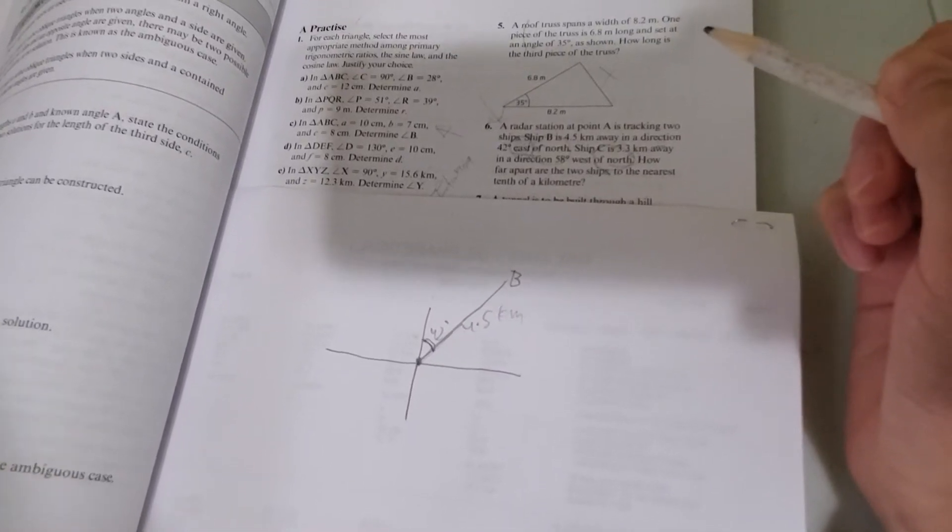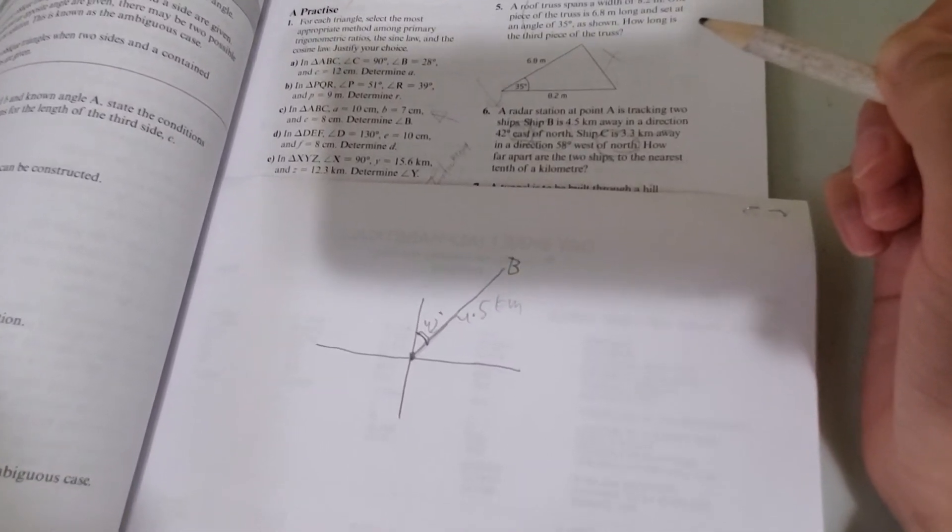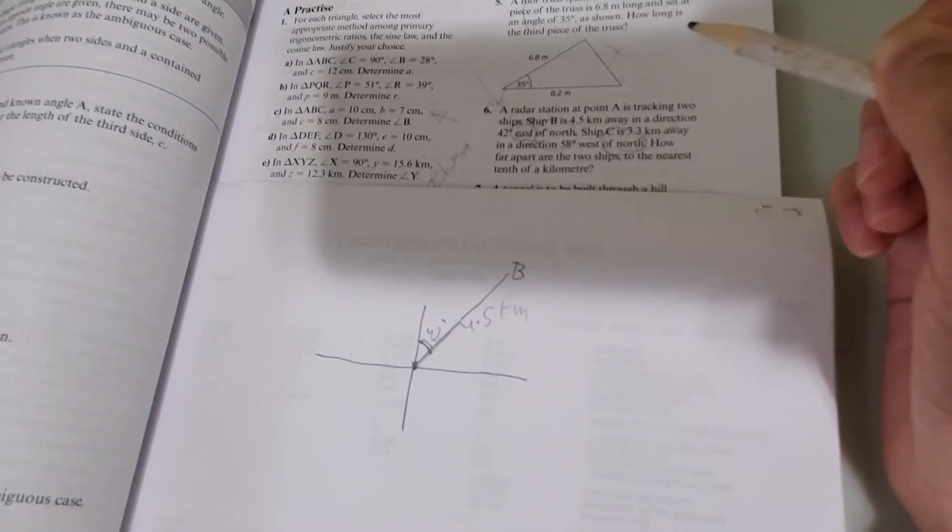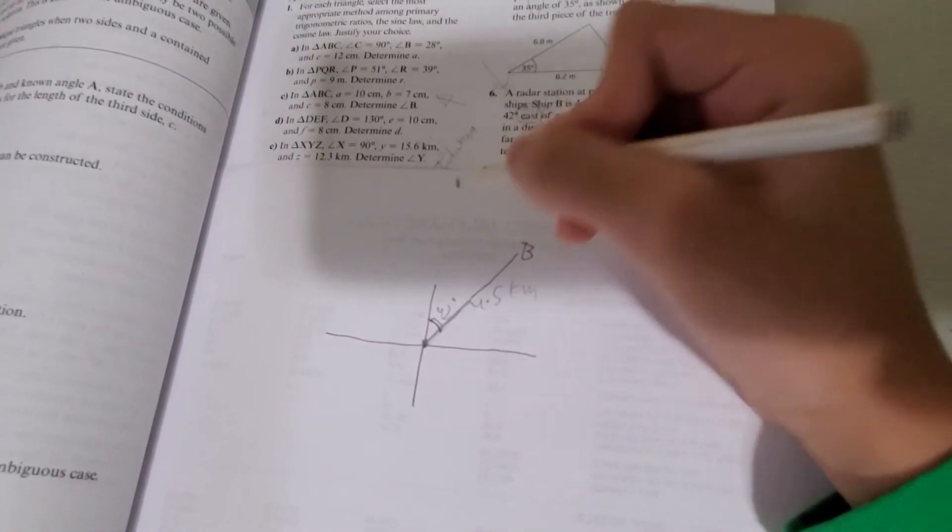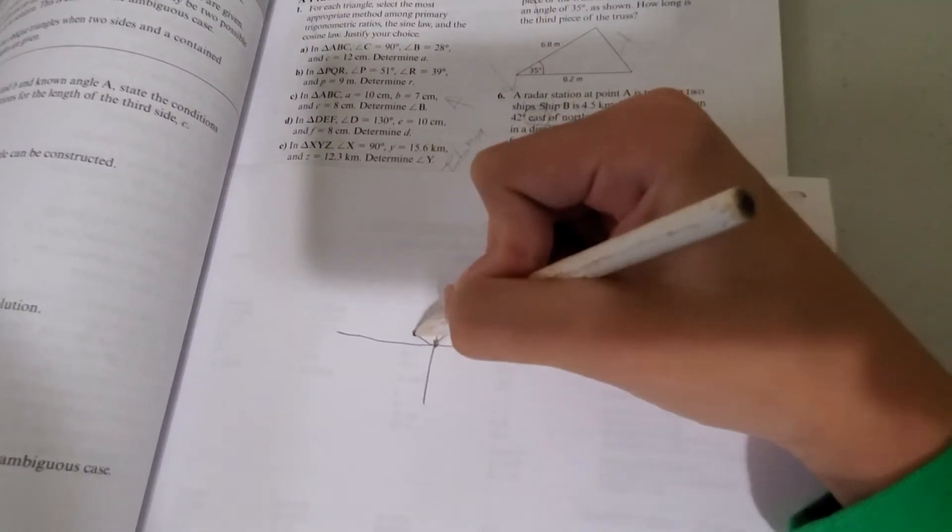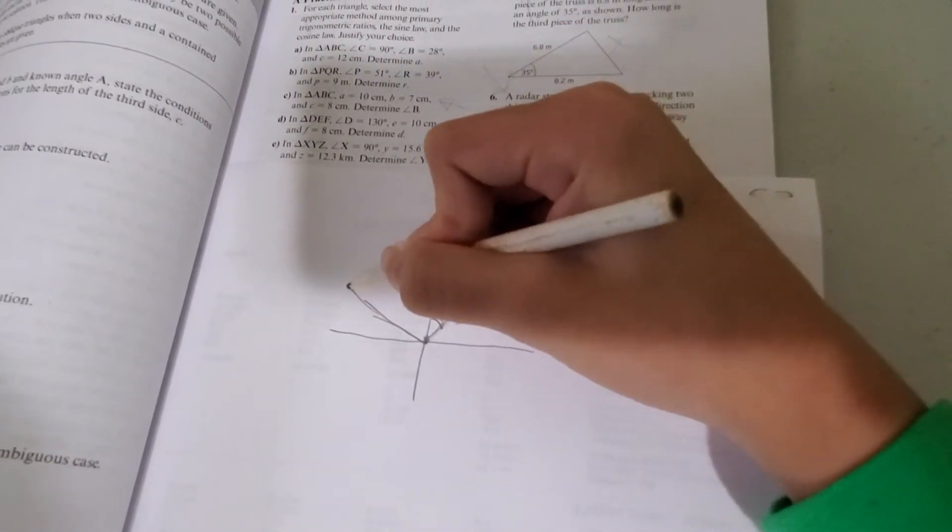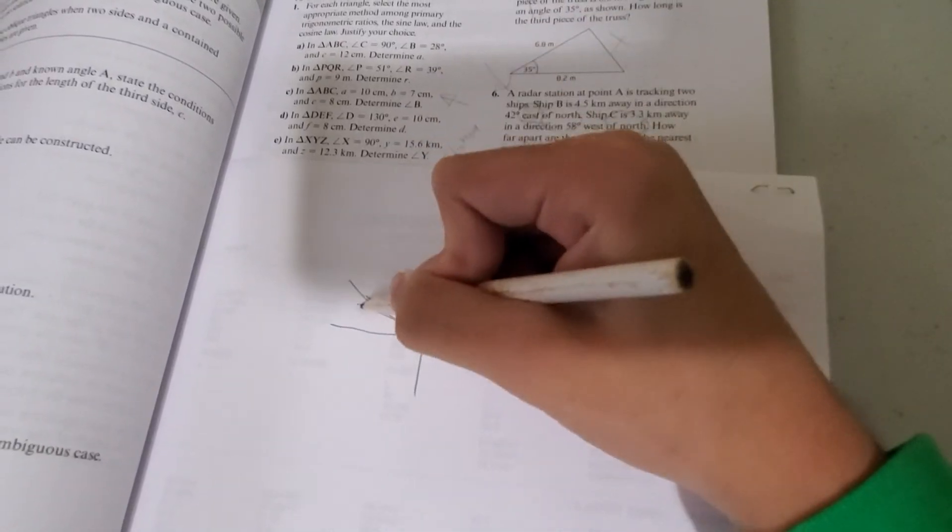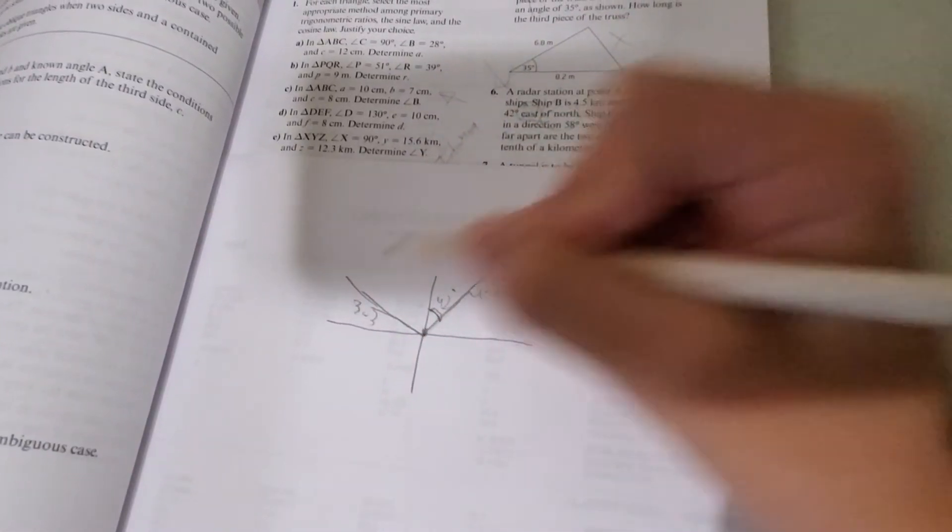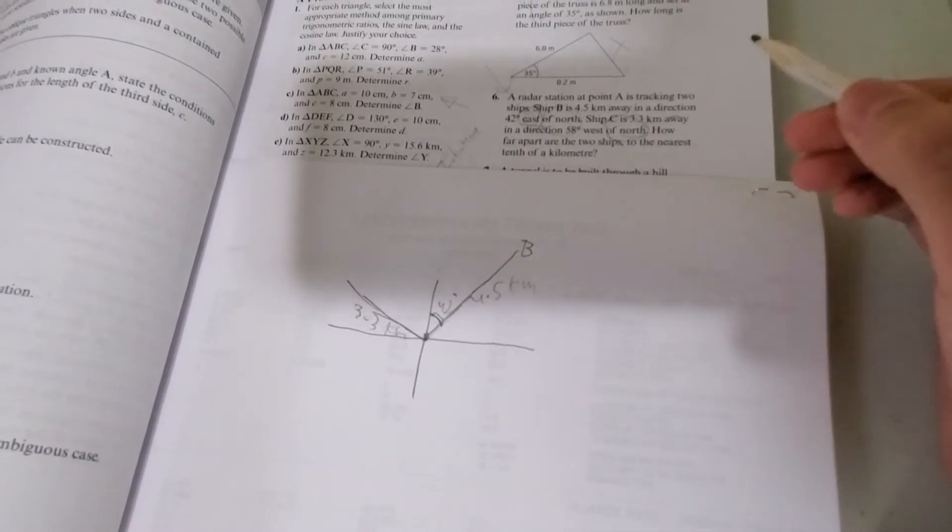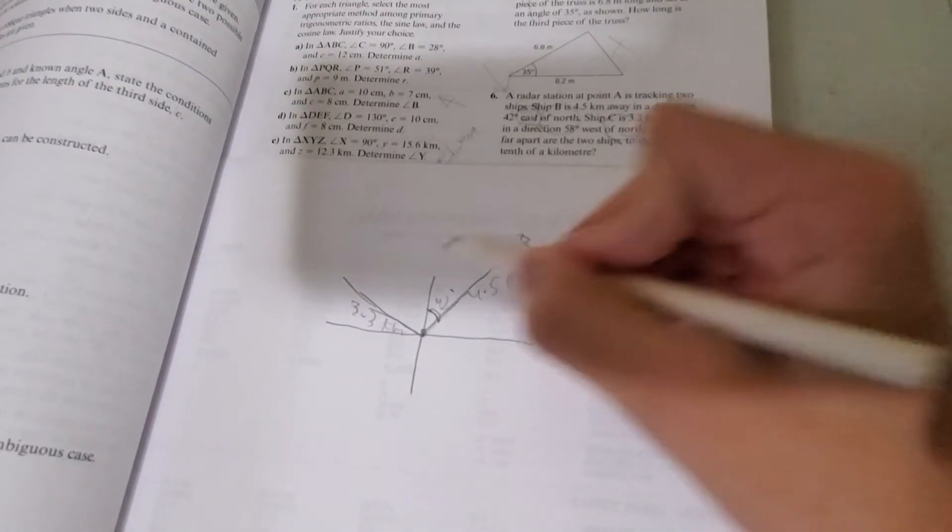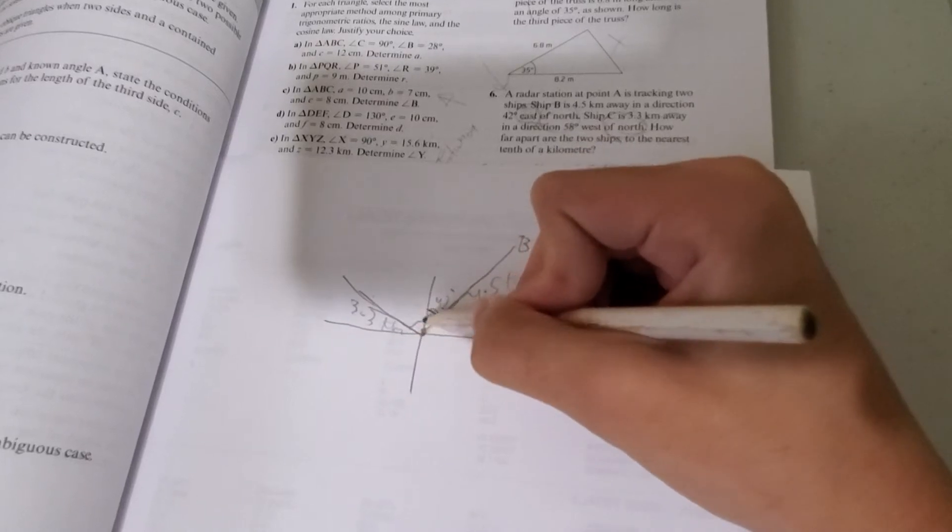And ship C is 3.3 kilometers away in a direction 58 degrees west of north. So what does that mean? Well, we know that west is this way. North is this way. 3.3 kilometers approximately. Draw around that much. Don't have to be exact. Just be reasonable. And in a direction 58 degrees west of north. West of north. 58 degrees.